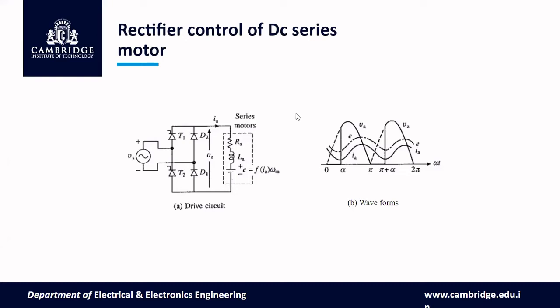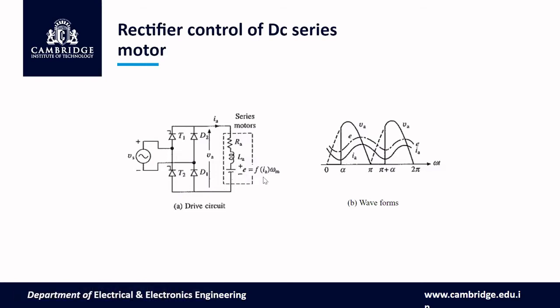Single phase controlled rectifier fed DC drives motors are employed, mainly in traction. The figure shown here is for the single phase half control rectifier fed DC motors, along with its waveform. Since back EMF decreases with armature current, discontinuous operation is seen in a narrow range. The continuous operation will be as shown in the figure. In steady state, fluctuating speeds are negligible.